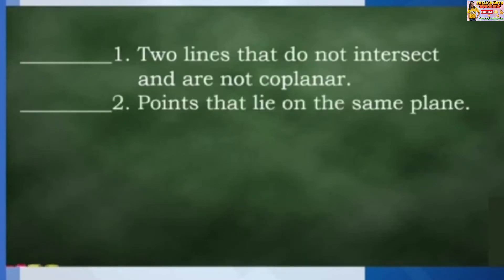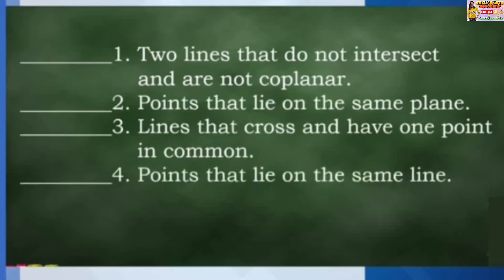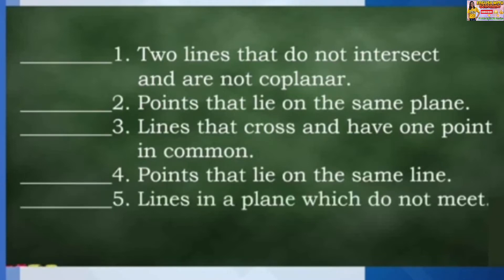Number 2: Points that lie on the same plane. Number 3: Lines that cross and have one point in common. Number 4: Points that lie on the same line. And number 5: Lines in a plane which do not meet.